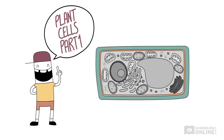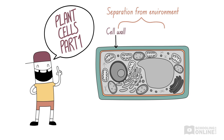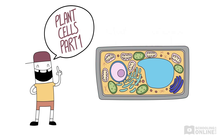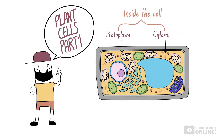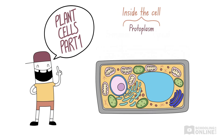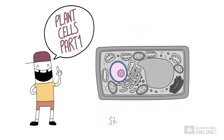If you remember from the previous lesson, plant cells are separated from their environment by a cell wall and a cell membrane. Everything inside the plant cell is the protoplasm, which is mostly filled with cytosol. The protoplasm can be divided into the cytoplasm and the nucleus. The nucleus stores all the hereditary genetic information in the cell and controls and coordinates all cell activities.